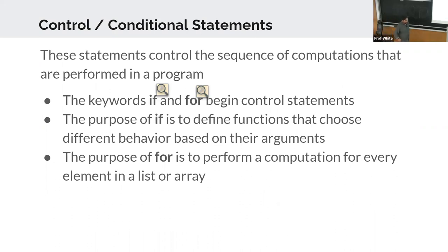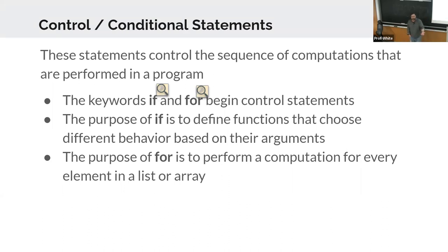Just a little bit of a review — there were a number of questions about control statements. We covered them pretty quickly last time, so here's the formal definition again. The if statement is not the hard one — if this, then do this thing. The for loop people find a bit more confusing: for every one of these things, do this thing.